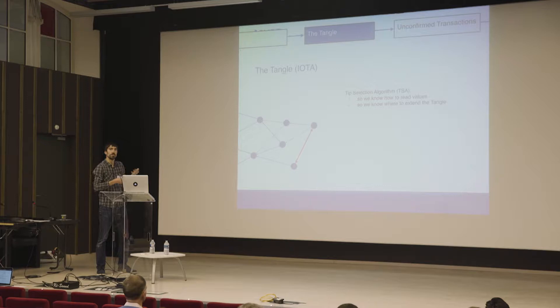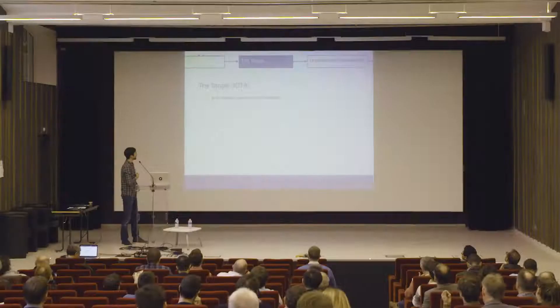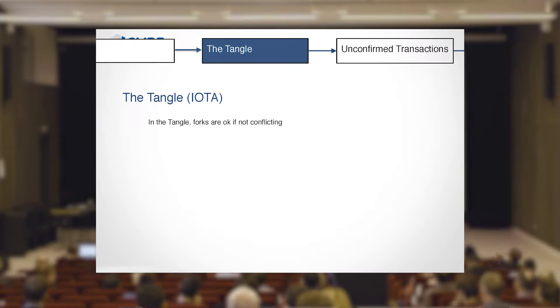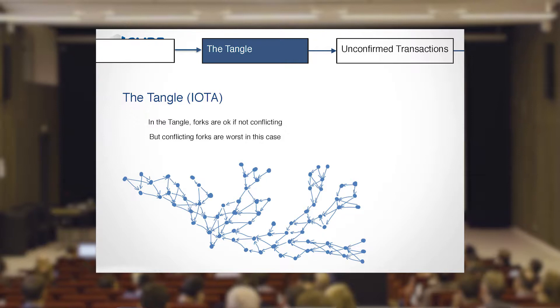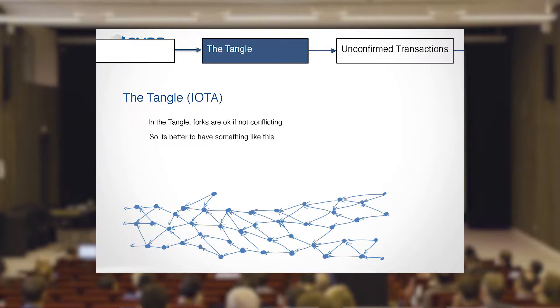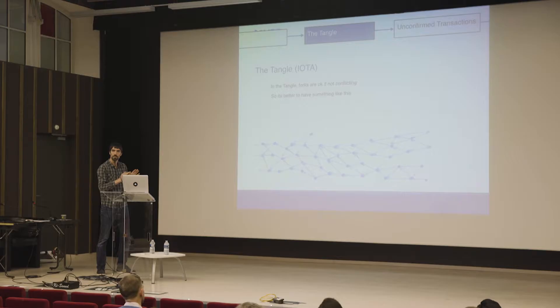There are several ways to extend the Tangle. Forks without conflict are not really a problem and are not even called forks. But if there are two conflicting transactions, it becomes a real problem — two big sub-tangles will conflict and one must be discarded. The ideal behavior is that the number of tips remains almost constant, so that if there is a conflict, not too many transactions are discarded.